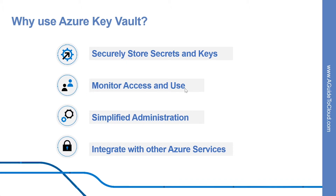How can you use Azure Key Vault to monitor access and use? Once you have created a key vault, you will want to monitor how and when your keys and secrets are being accessed. You can do this by enabling logging for Key Vault. You can configure Azure Key Vault to archive to a storage account, stream to an Event Hub, and send the logs to Log Analytics. You have control over your logs — you may secure them by restricting access and delete logs you no longer need.